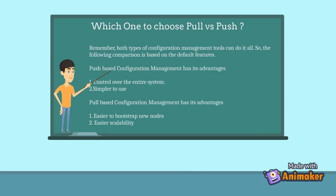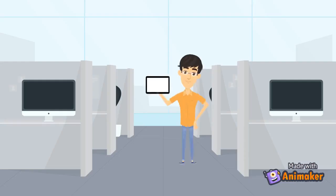Which one to choose — pull or push configuration management? Remember, both types of configuration management tools can do it all, so the following comparison is based on default features. Push-based configuration management advantages: 1. Control over the entire system. 2. Simpler to use. Pull-based configuration management advantages: 1. Easier to bootstrap new nodes. 2. Easier scalability.